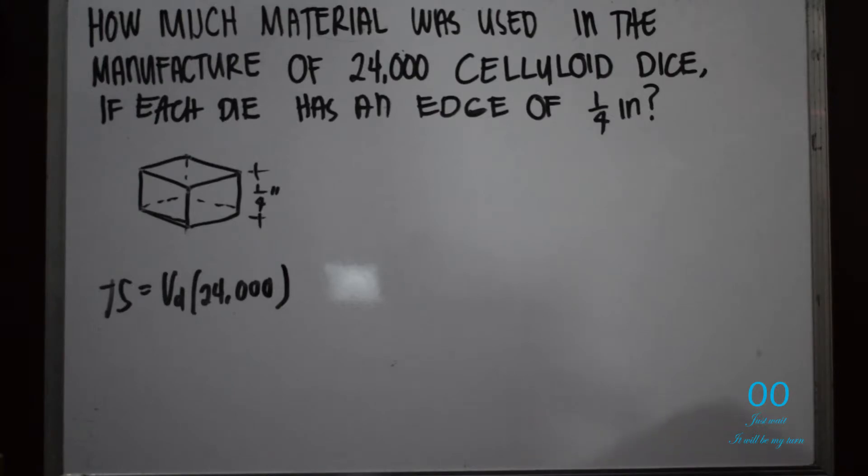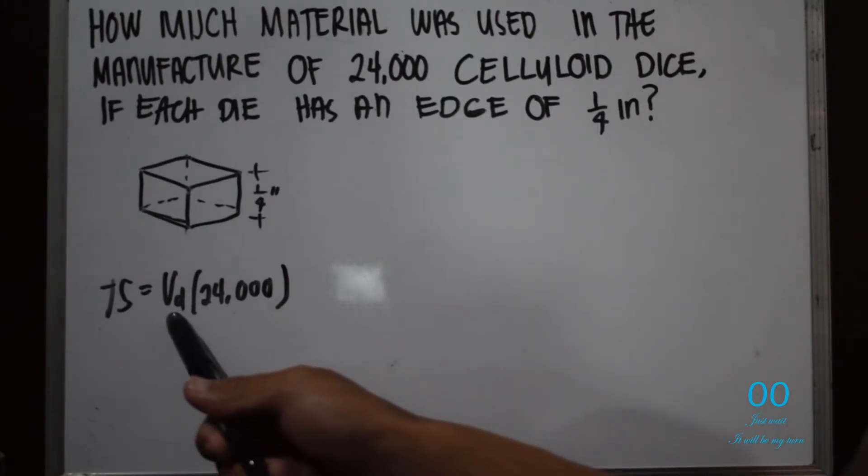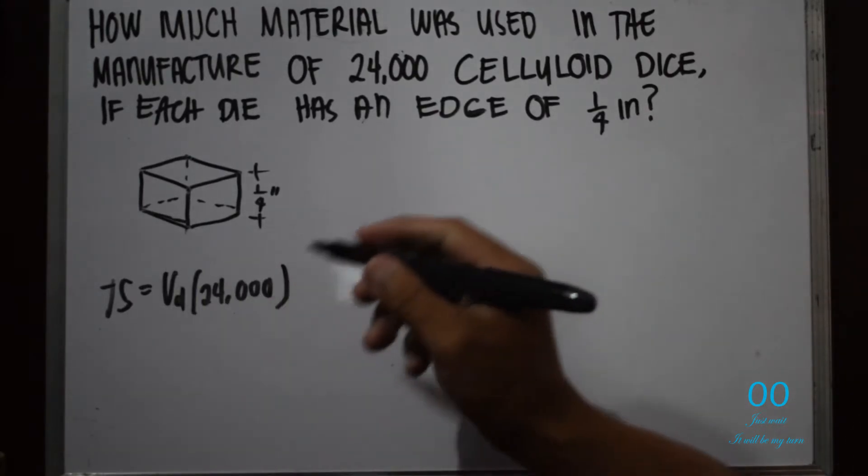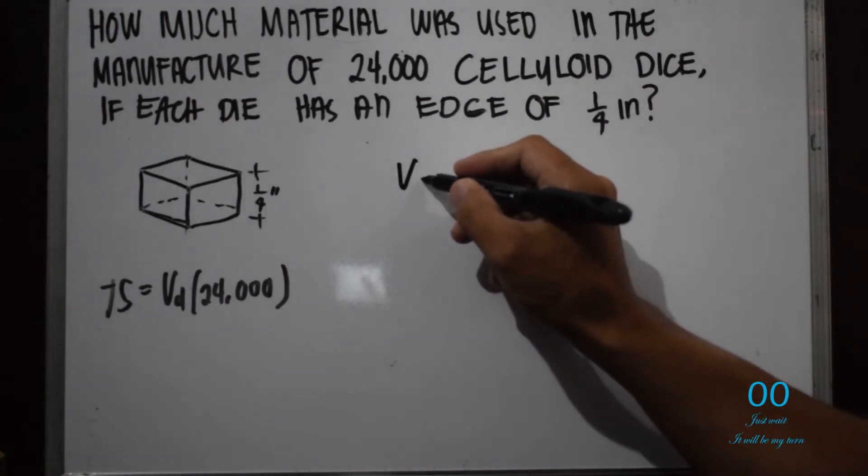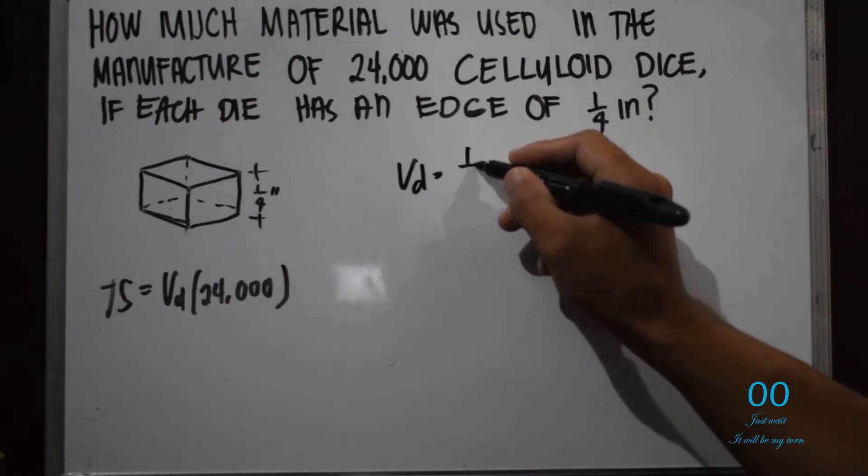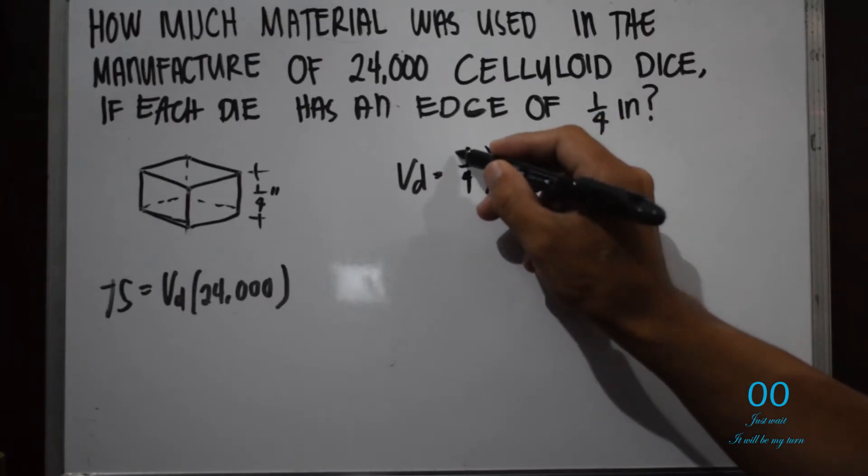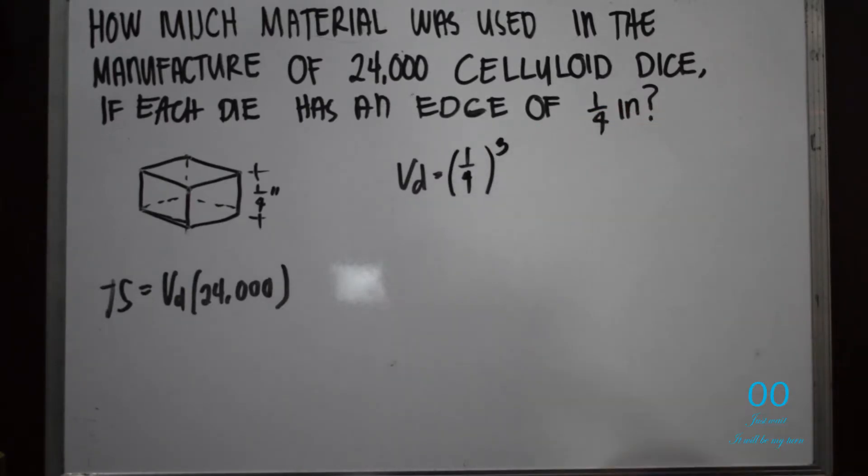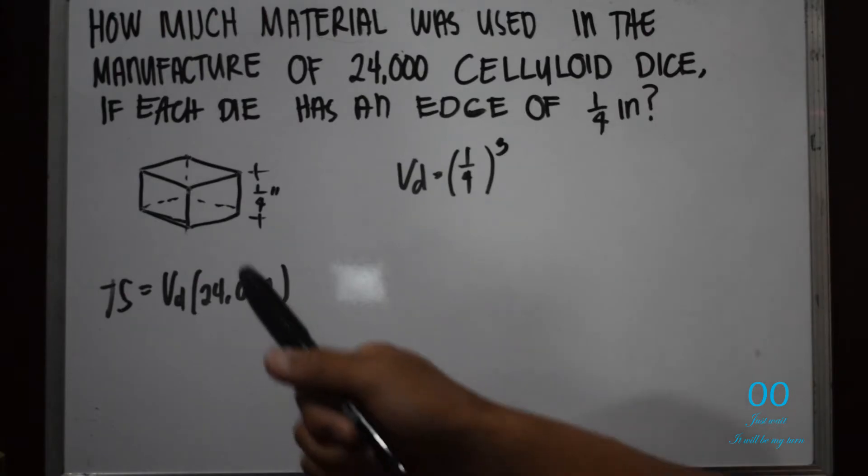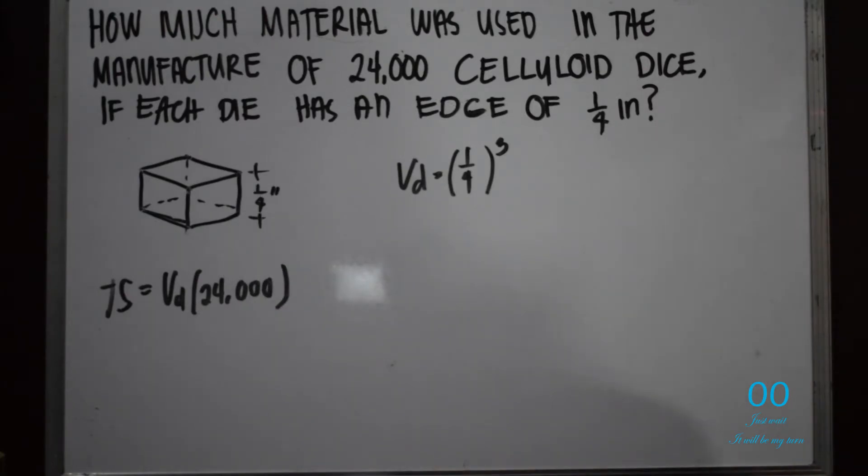Okay, so that will be our guiding formula. We just need to calculate the volume of one dice. The volume of one dice is 1/4 raised to 3. Volume for cube: you get one edge and you raise it to 3, or you cube it.